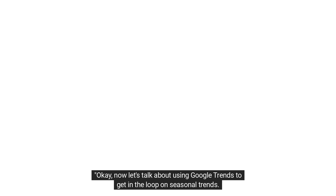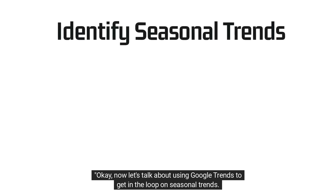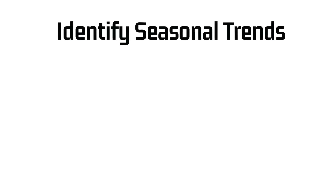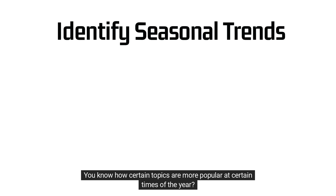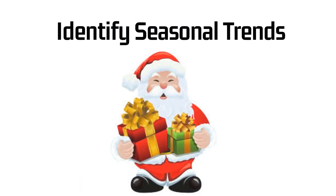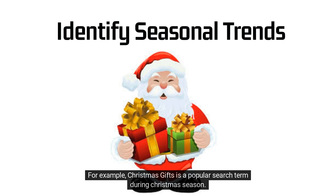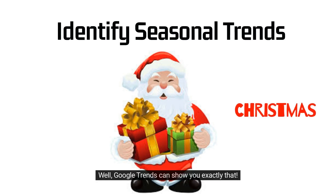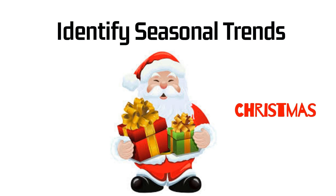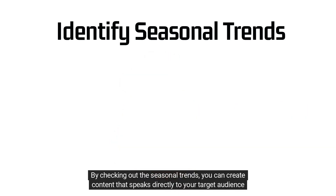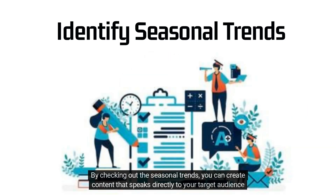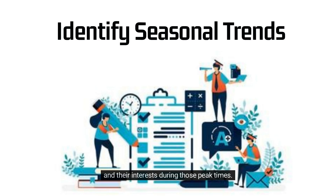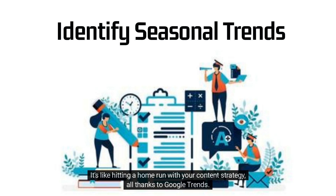Now let's talk about using Google Trends to get in the loop on seasonal trends. You know how certain topics are more popular at certain times of the year. For example, 'Christmas gifts' is a popular search term during the Christmas season. Google Trends can show you exactly that. By checking out the seasonal trends, you can create content that speaks directly to your target audience and their interests during those peak times.